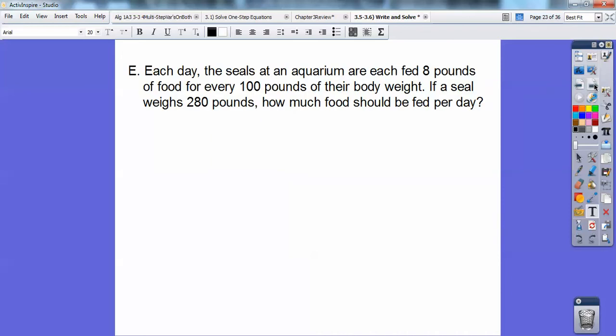Each day, the seals at an aquarium are each fed 8 pounds of food for every 100 pounds of their body weight. If a seal weighs 280 pounds, how much food will be fed per day to that seal? I'm going to set up a proportion. 8 pounds of food they get per 100 pounds of weight. So how many pounds of food per 280 pounds of weight? Notice I did pounds of food over pounds of weight here. And I don't want to deal with the calculator. So I know 4 goes into 8 and 4 goes into 100. 4 quarters equals 100. So 4 goes into 100 25 times.